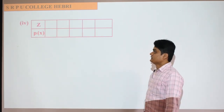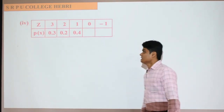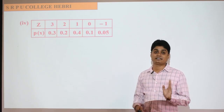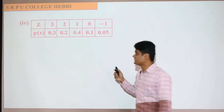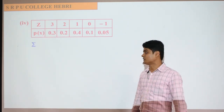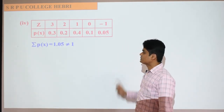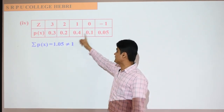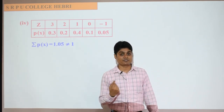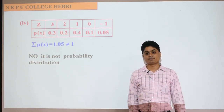For the next distribution, check the second row — all values are greater than zero and less than one, so that is not a problem. Now check the sum: 0.3 plus 0.2 plus 0.5 is 1.0, plus 0.4 is 1.4 — wait, when we add all values, the sum comes to more than one. It must always be equal to one. Since the sum is more than one, this distribution is not a probability distribution. Remember: sum should be equal to one, each entry should be positive, and each entry should be less than one.